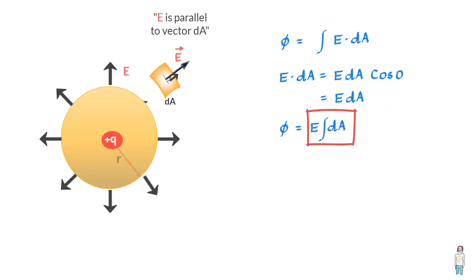Well, integral of dA is nothing but the area of the sphere itself, that is 4πR². So we can say that the total flux value is equal to EA, which equals Q upon epsilon naught.